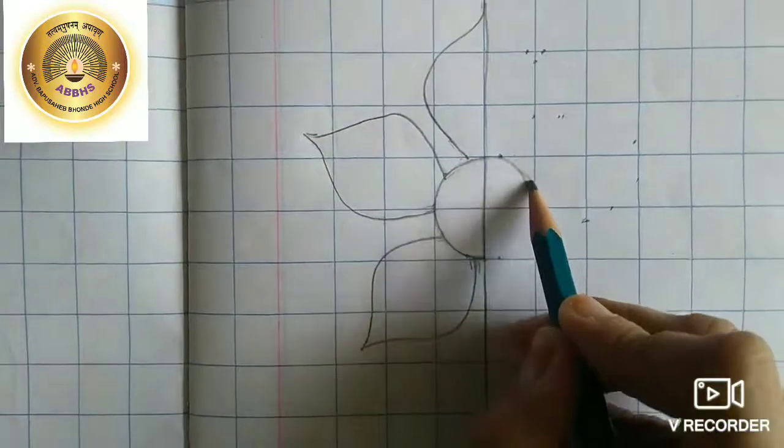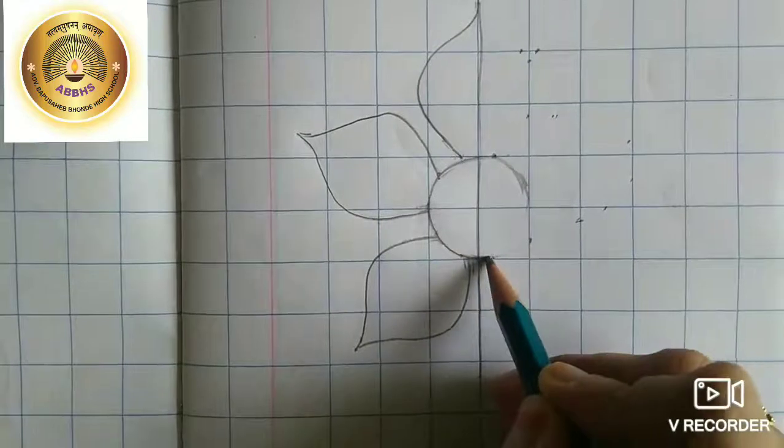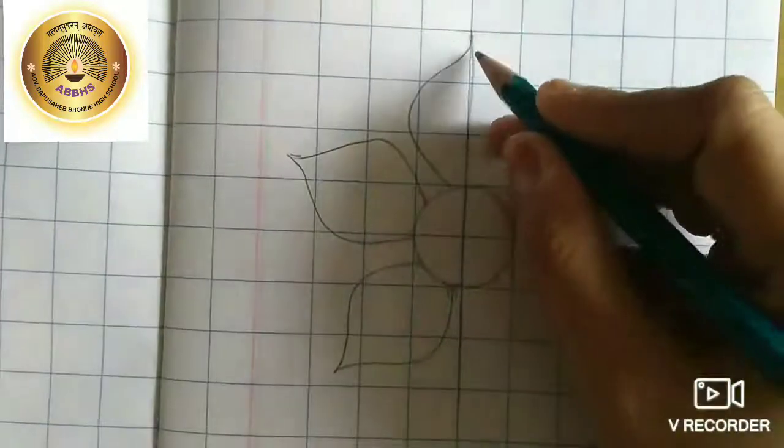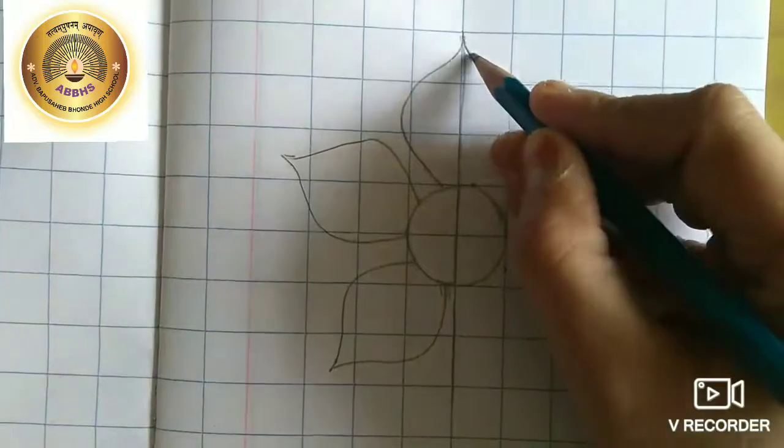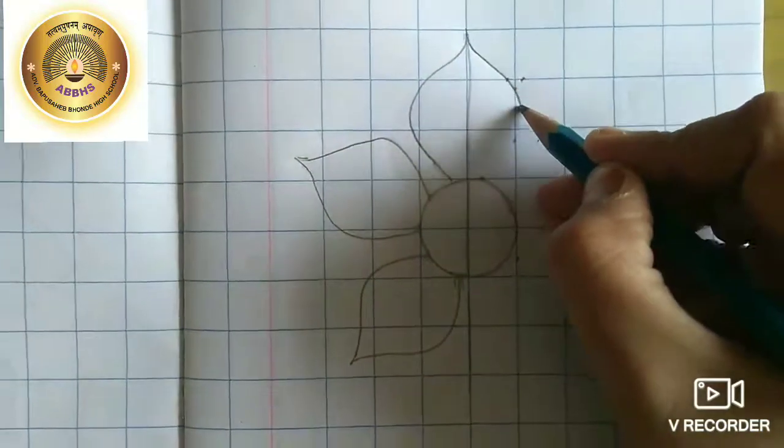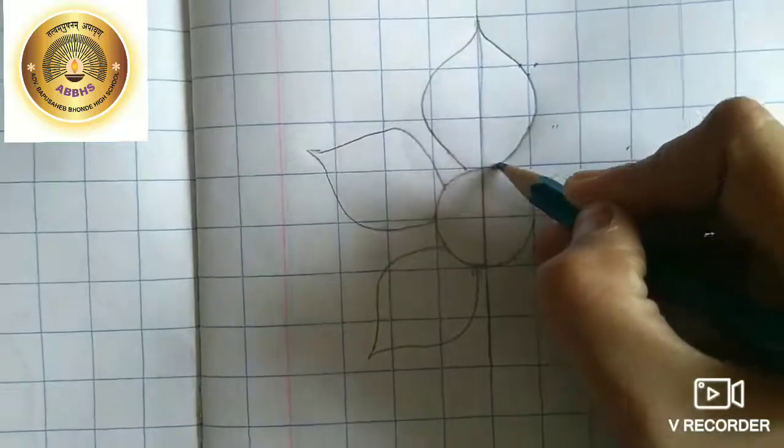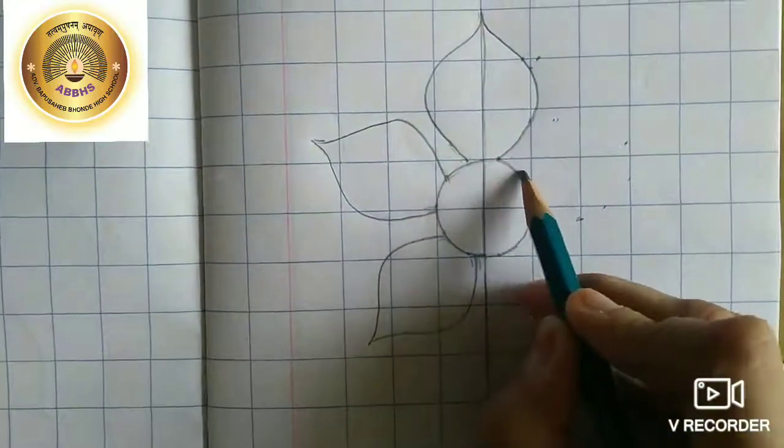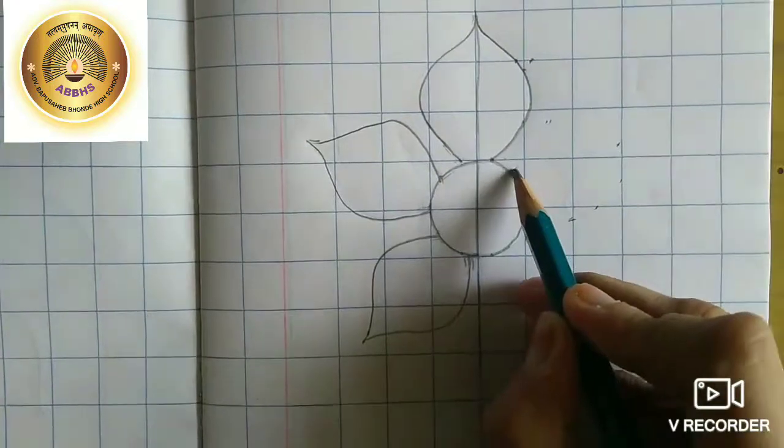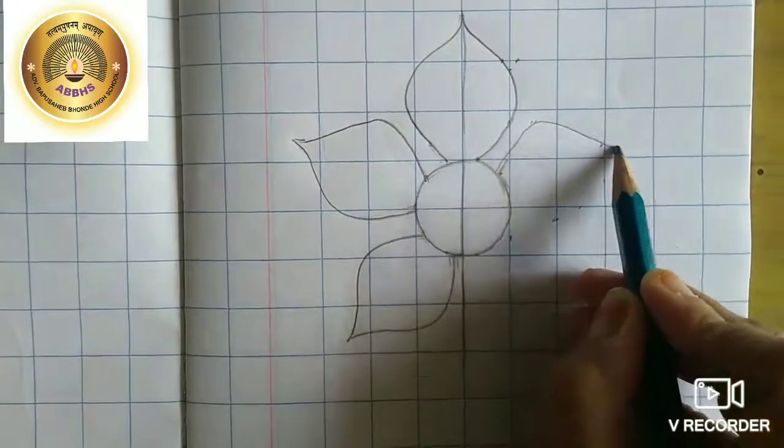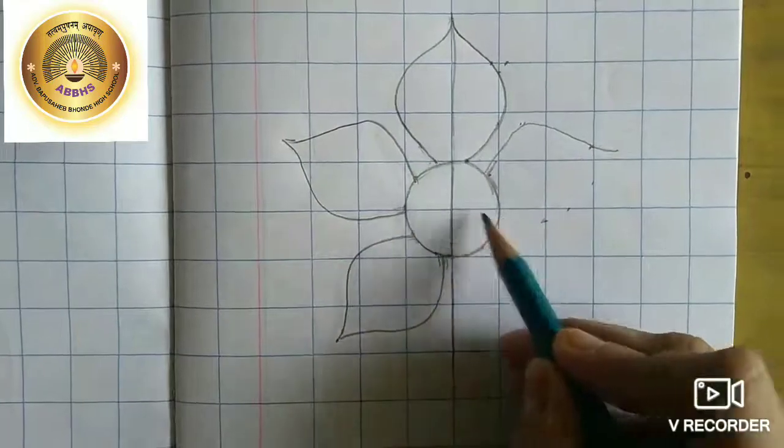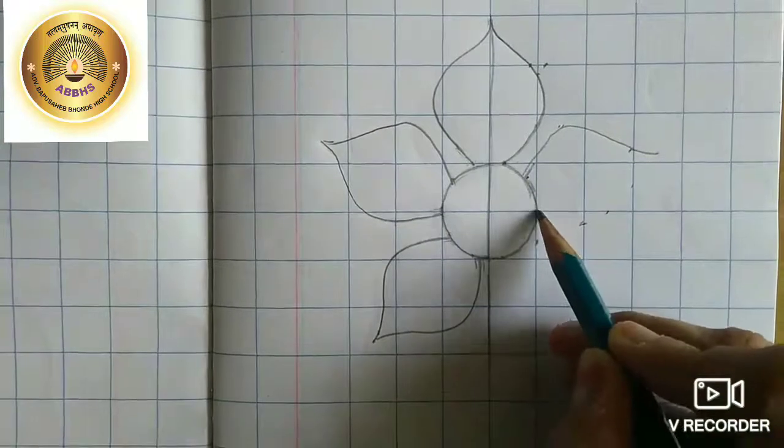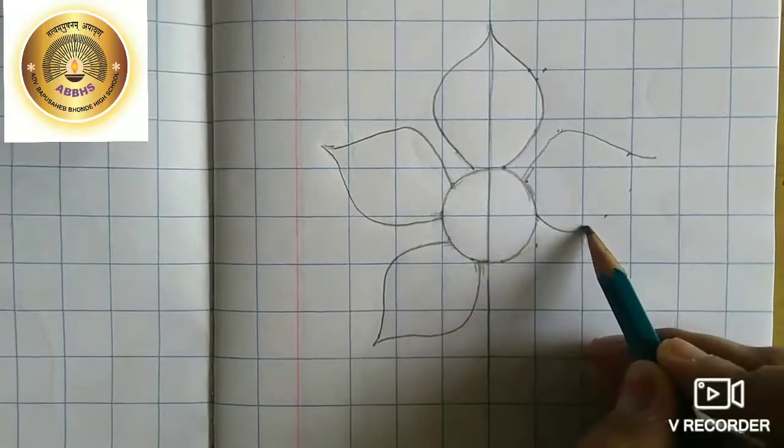Now, I will join the marked dots on the square while observing the shape of the flower on the other side. Do not join the dots just blindly. Draw the required shape which is on the other side. This is just for your practice to learn symmetrical drawings.